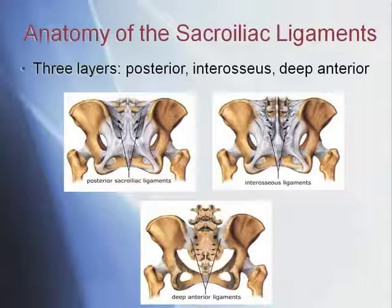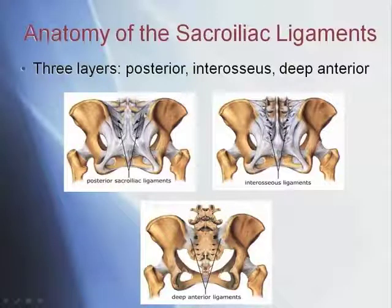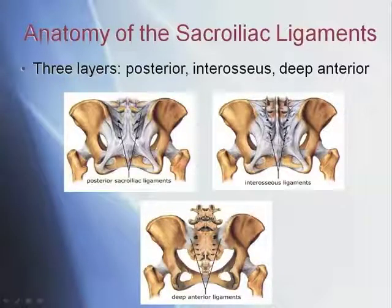There are three layers of sacroiliac ligaments: the posterior sacroiliac ligaments, underneath those are the interosseous sacroiliac ligaments, and deeper still are the anterior sacroiliac ligaments. On the left we have the ones that are on the surface, on the right we have the interosseous ones underneath that, and then we have the deep ones on the bottom.